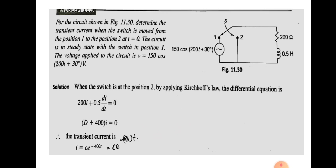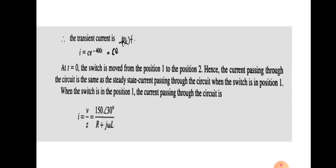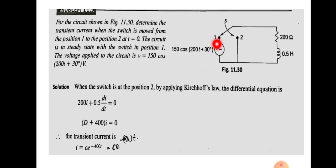When the switch was initially at position 1 and is moved to position 2 at t equal to 0, the current passing through the circuit equals the steady-state current from position 1. With the switch at position 1, there is a closed loop containing the voltage source V = 150 cos(200t + 30°) V, and different components. The current equals the total voltage divided by the impedance.